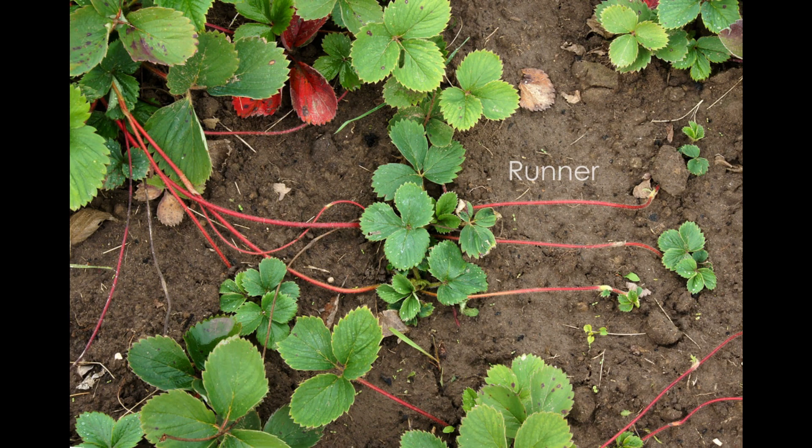A runner is a stem that grows horizontally out of the ground, which means it grows sideways. Examples include strawberries and spider plants. The picture shown here is a strawberry plant.